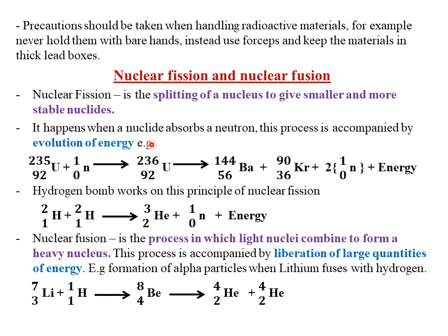For example, we can have uranium, which has a mass number of 235, atomic number 92, absorbing a neutron, which has a mass number of 1 and no atomic number. Then this uranium is going to undergo nuclear fission, or it is going to split to form barium, which has a mass number of 144, atomic number 56.